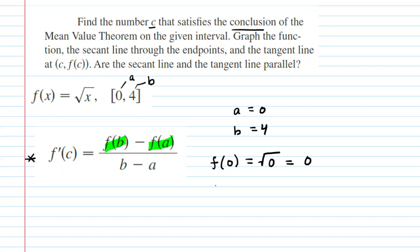And then for f(b), we're going to plug the b value, so four, into the function, and we're going to end up with the square root of four, which is equal to two. So far so good.